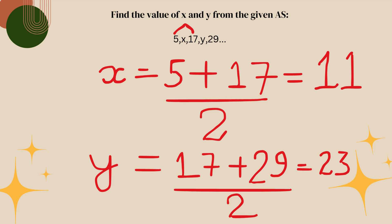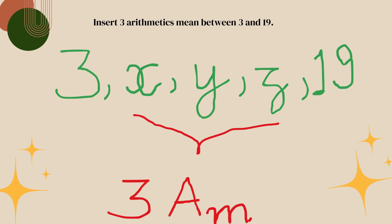We will see a question where we need to find the value of x or y from the given arithmetic sequence. Since you now know the concept of arithmetic mean, some questions can be solved using it. This is a straightforward question where x and y are arithmetic means. We will insert three arithmetic means between 3 and 19, calling them x, y, and z.